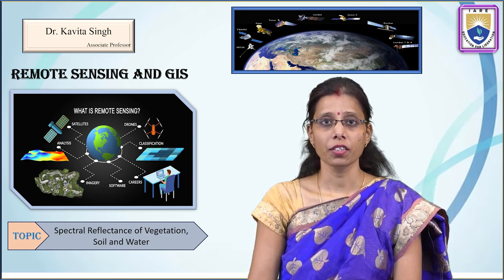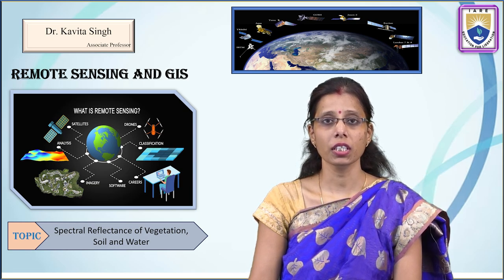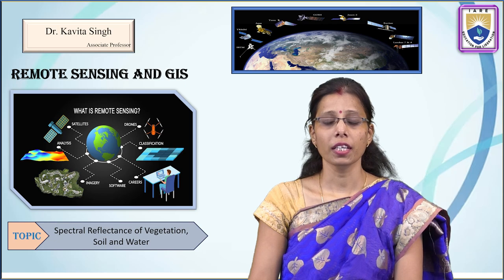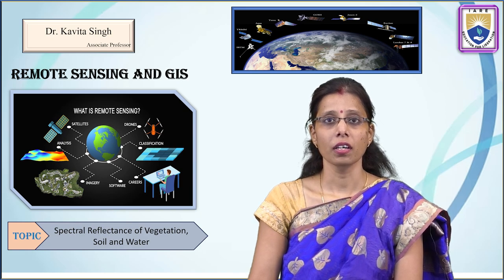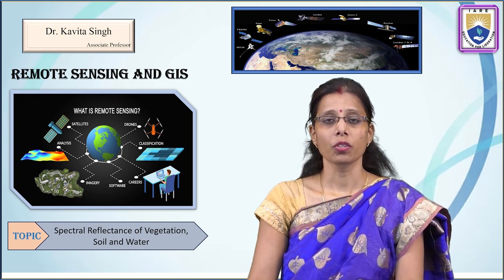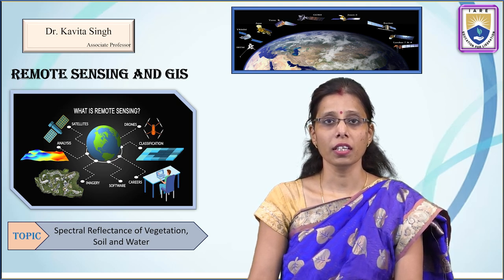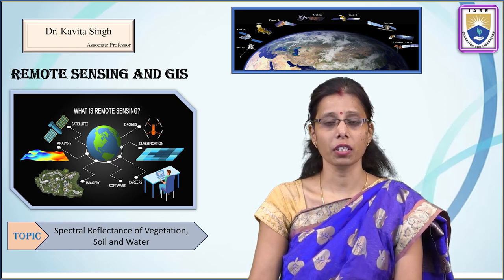In the previous lecture, we discussed about energy interactions with the atmosphere and energy interactions with the earth surface feature. When the energy interacts with the atmosphere, two things happen: either it is absorbed, or scattering happens. Similarly, when energy interacts with the earth surface feature, the mechanisms are either absorption, reflection, or re-emission to another object.